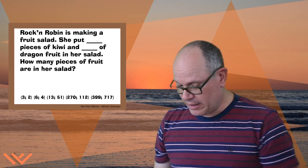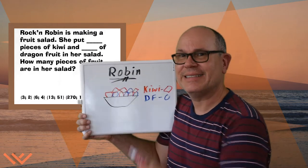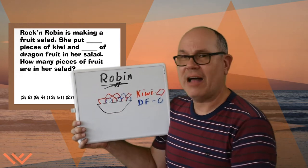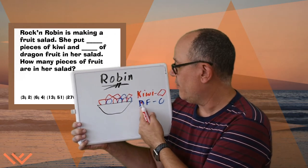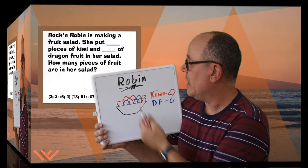It's picture time, right? Right, let's take a look. So here's Rockin' Robin. Here's her salad. She has kiwi, which is in red, and dragon fruit, I just initialized it, in blue. So let's take a look.